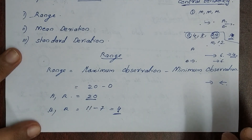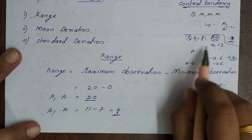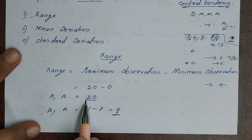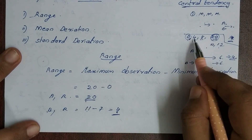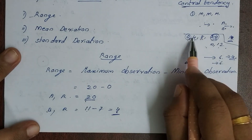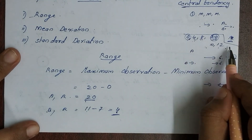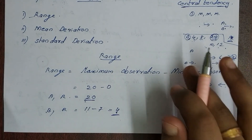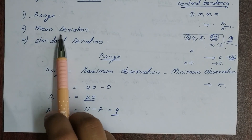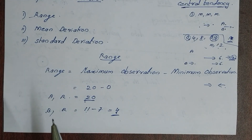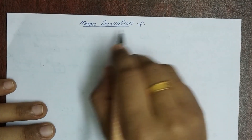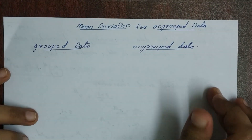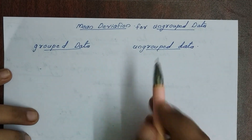Looking at the example, we get the same result from two different observations and two different data sets, and we cannot get a conclusion. So that is the limitation of range. We have to overcome this by measuring the mean deviation. Next is mean deviation. We have to measure the mean deviation for ungrouped data. What is grouped data and ungrouped data?